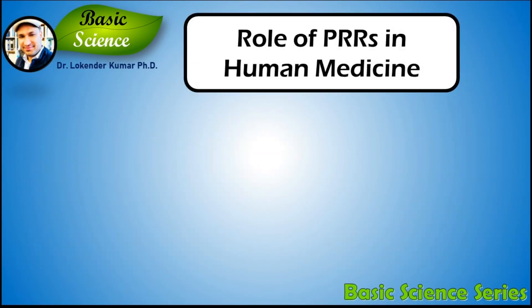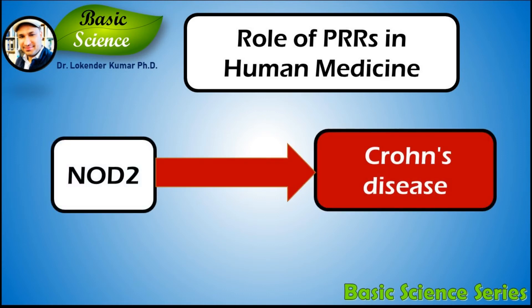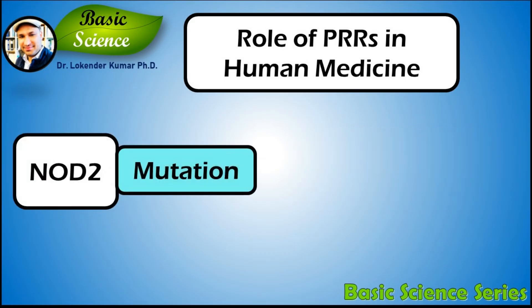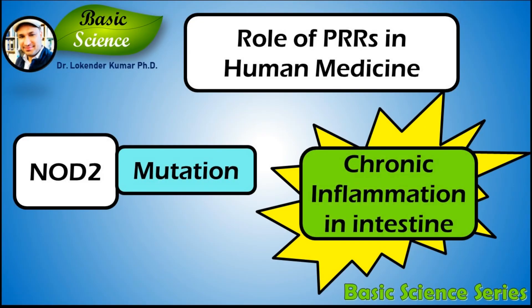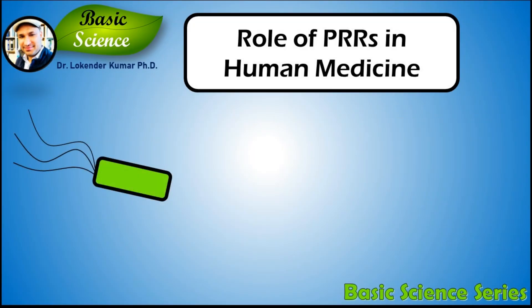Regarding PRRs in human medicine: NOD2 has been associated, through loss and gain of function, with the development of Crohn's disease. Mutations in NOD2 in combination with environmental factors lead to the development of chronic inflammation in the intestine. Another possible exploitation of PRRs in human medicine is related to tumor malignancies of the intestine.